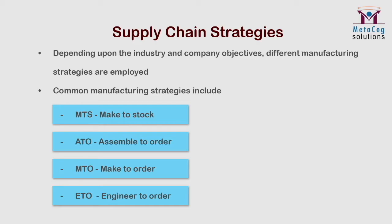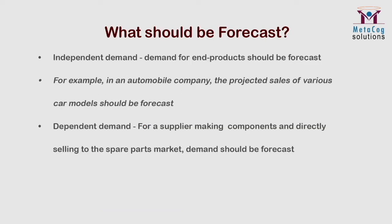Since the product is made and stocked in anticipation of sales, sales orders do not drive manufacturing — the forecast does. For example, a car is an item of independent demand, while the steering wheel assembly used in the manufacture of the car is an item of dependent demand. Dependent demand should not be forecast, as it is possible to calculate it. Techniques such as MRP are used to calculate dependent demand.